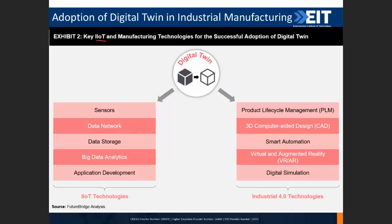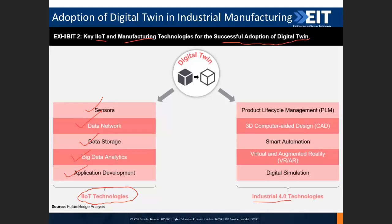Key IIoT and manufacturing technologies for successful adoption of digital twin: you need sensors as a critical part, feeding data to your data network which stores and analyzes the data, and you may need application development. These are all IIoT — industrial internet of things — technologies. On the other hand, you also need Industry 4.0 technologies like PLM for lifecycle management, 3D CAD models, smart automation, VR and AR, and digital simulation. Combining these two sets of technologies can help you build digital twin for your industry.